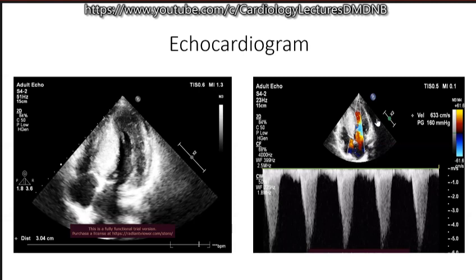Another technique to bedside demonstrate dynamic obstruction is administration of amyl nitrite. Amyl nitrite is still mentioned in Braunwald's textbook — we once wrote to Braunwald about whether to include or remove it. Actually, even sublingual nitroglycerin is an excellent provocation. Give sublingual nitroglycerin and record your gradient. We do this with sorbitrate, and even in the cath lab, sublingual nitrates work well.